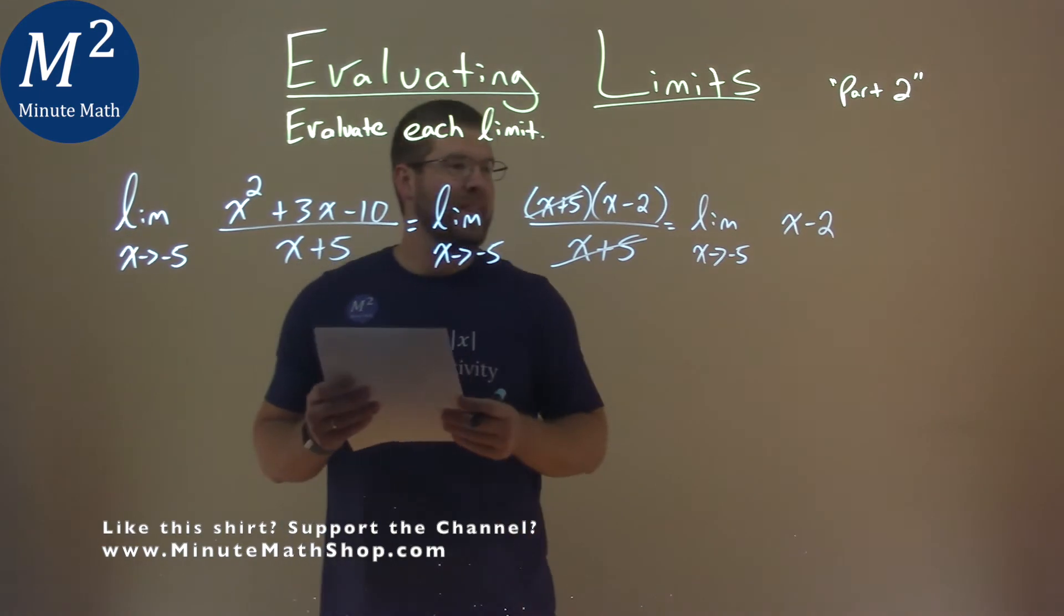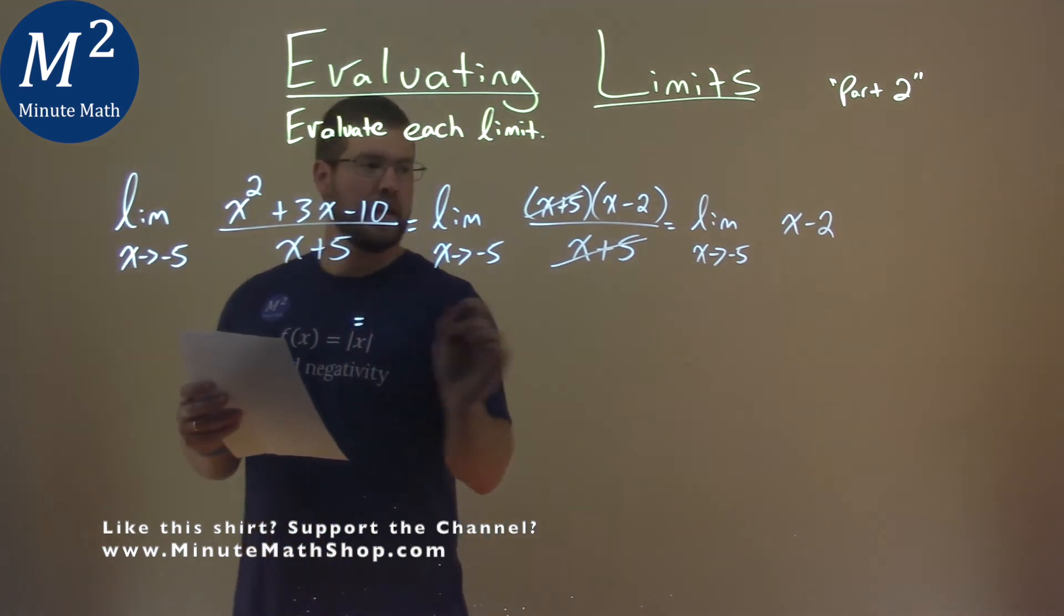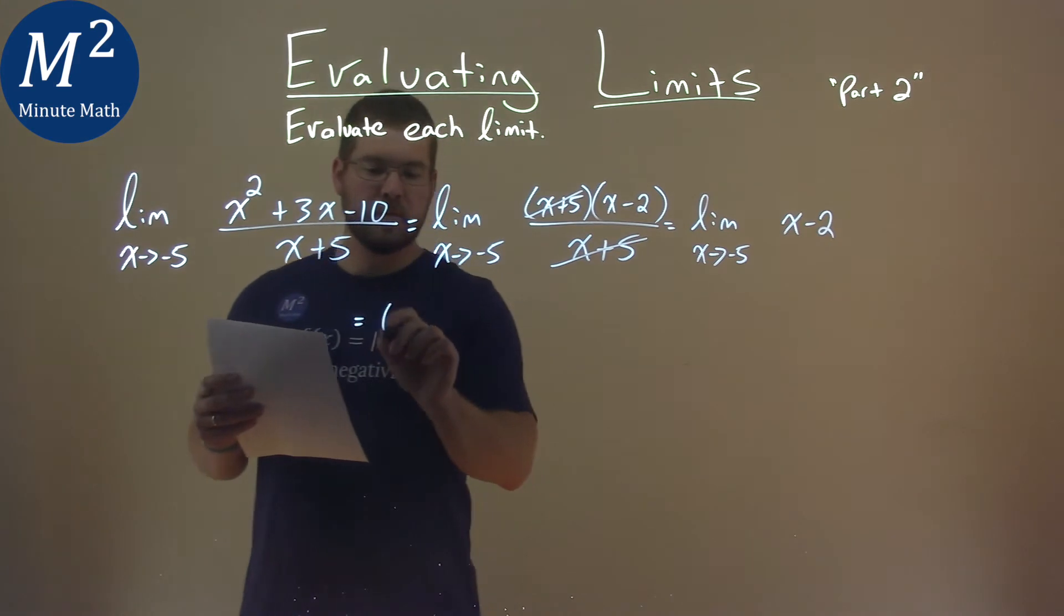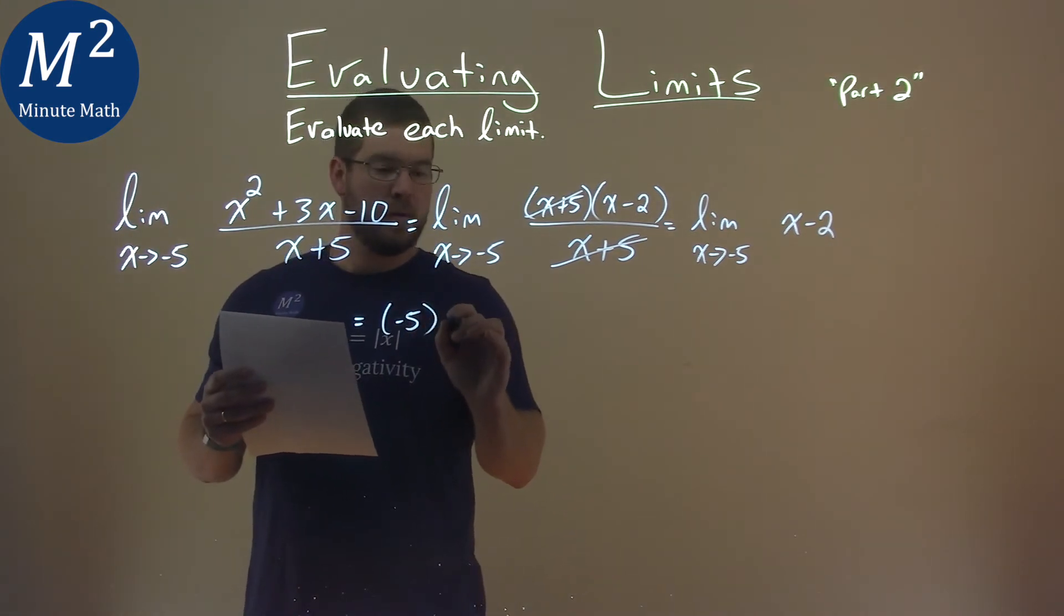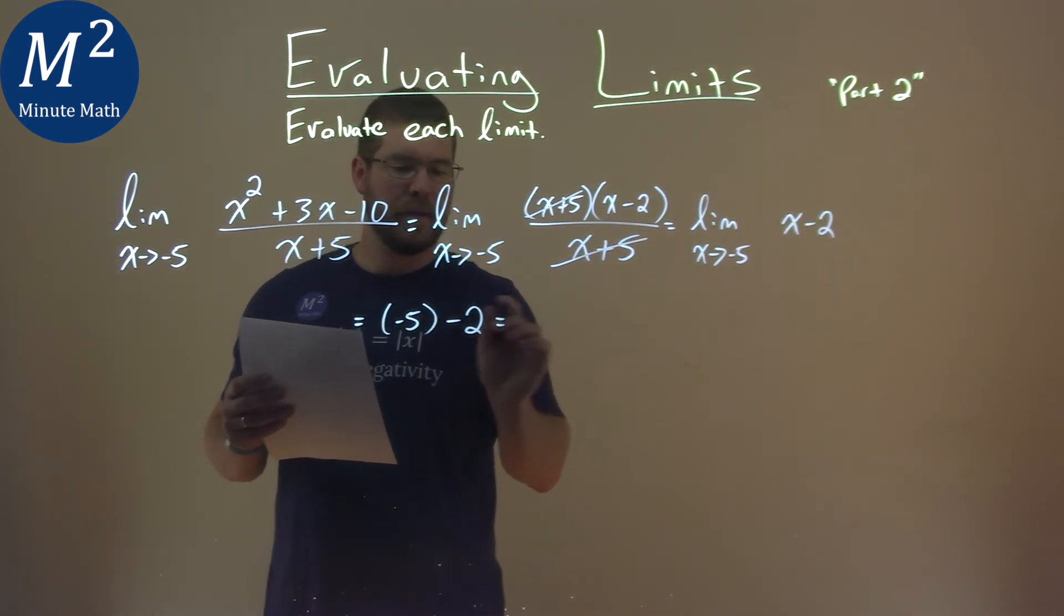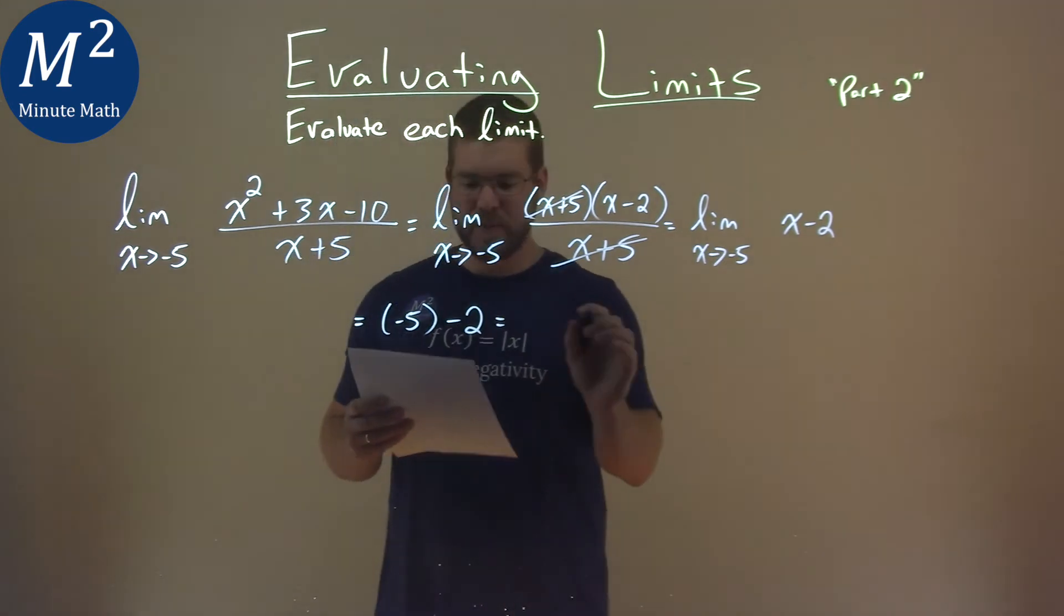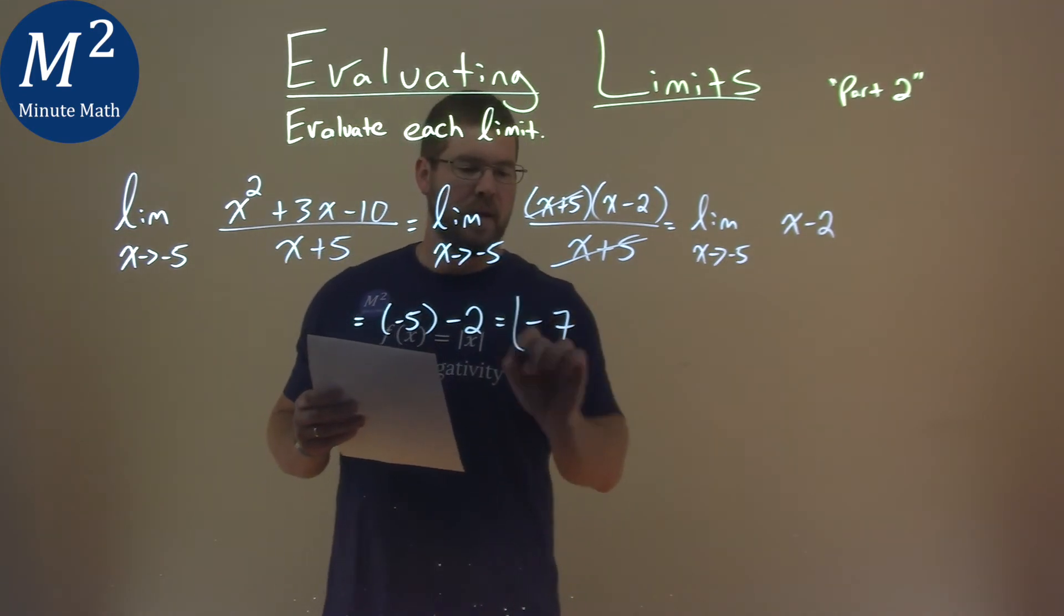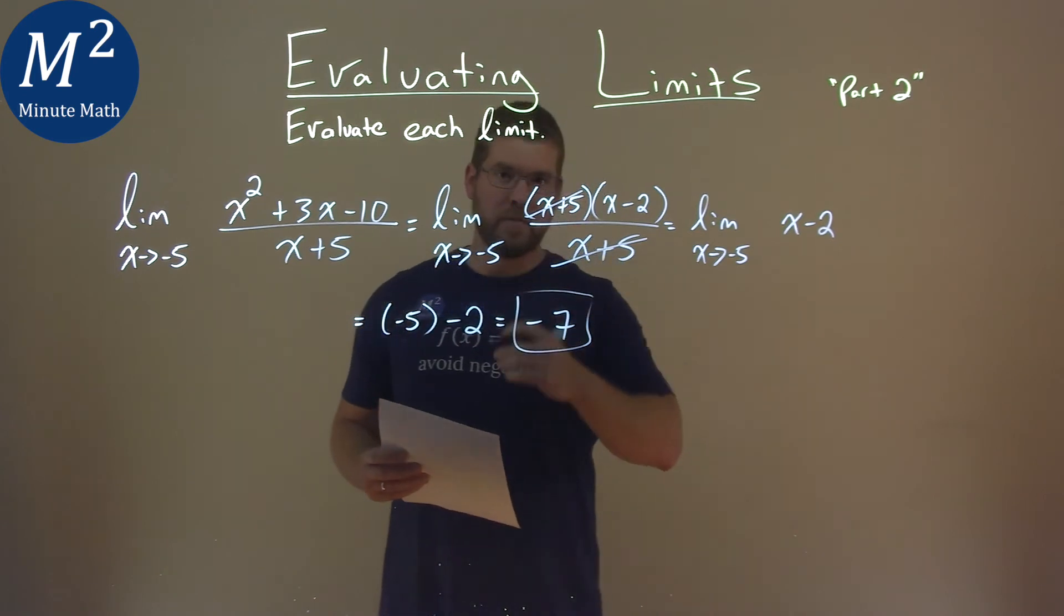It is at this point we can now take the limit. Put a negative 5 in for x, and we minus a 2, and negative 5 minus 2 is negative 7. And so my final answer for this limit is negative 7.